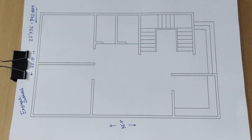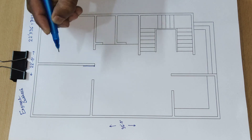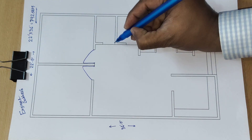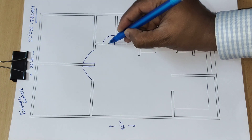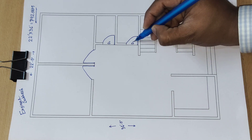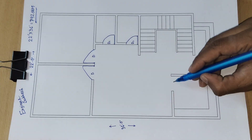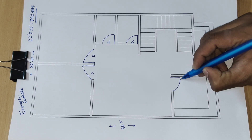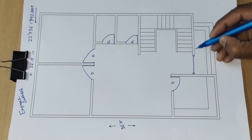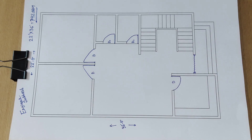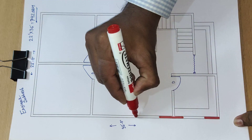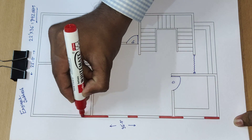Here we have the doors — this is D1, and this is also a door. This is a collapsible gate. We will draw the outside wall, which is 125 mm wide.